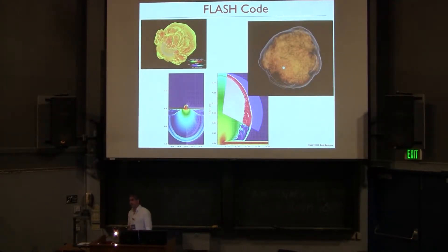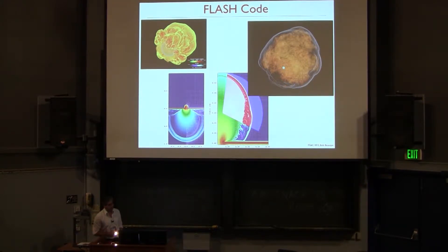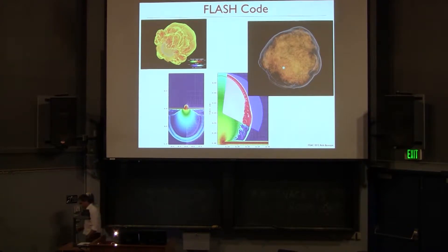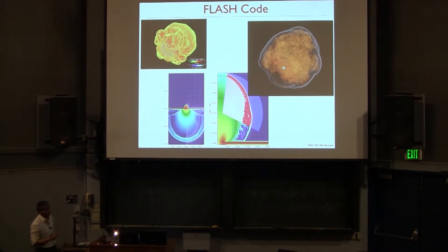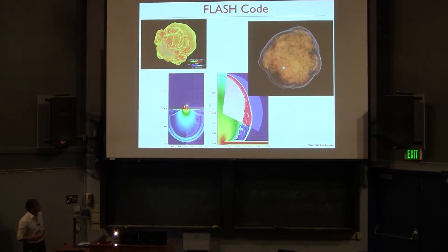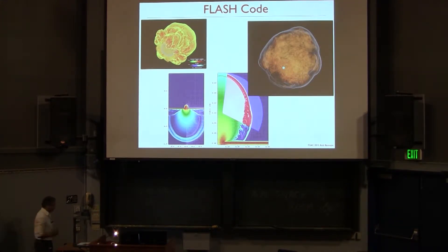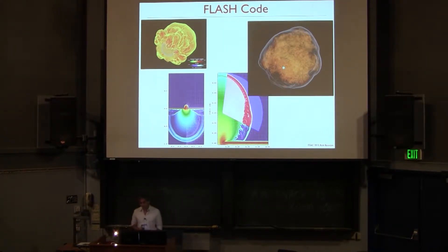Here are some nice pictures from the FLASH webpage, from the center, where you see the main research topics. They started with explosions, or thermonuclear flashes on the surface of white dwarfs, and you can also see the adaptivity of the code here, marked by these blocks of different refinement levels.